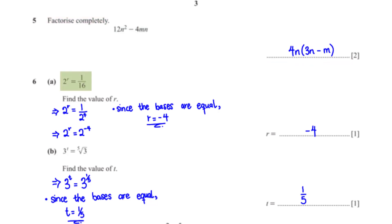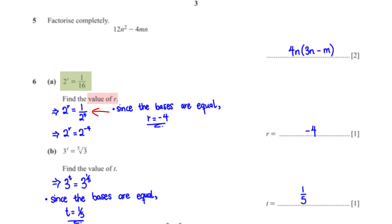2 raised to the power r is equal to 1 over 16. To find the value of r, we rewrite 1 over 16 as a base of 2. 1 over 16 becomes 1 over 2 raised to the power 4, which can be rewritten as 2 raised to the power negative 4. Since the bases are equal, the value of r is negative 4.